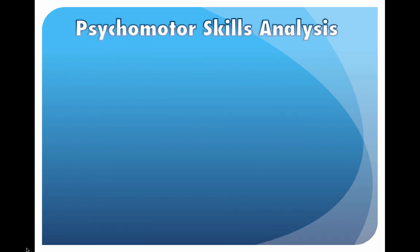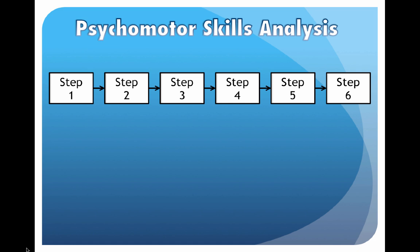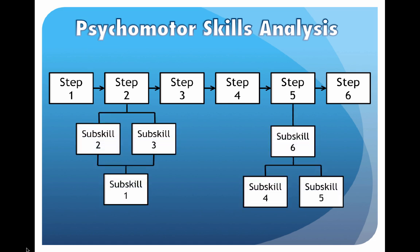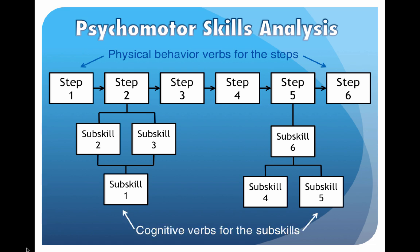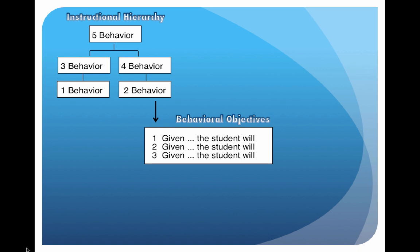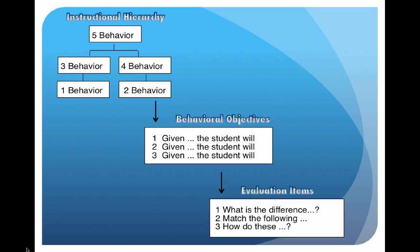Next is our psychomotor skills analysis. You do your goal analysis, and this is much of the instruction itself. The cognitive piece also needs a hierarchy similar to an intellectual skills hierarchy, but you may not need it for all of the steps. Use physical behavior verbs for the top steps, and cognitive verbs for the subskills. Once you have identified all of these behaviors, you'll be able to write your behavioral objectives as well as your evaluation items.